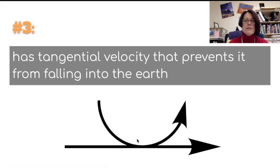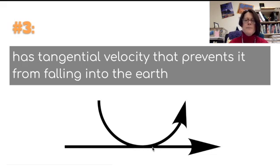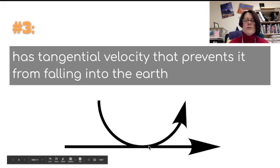this is a circle. This is the direction of the velocity. This velocity is tangent to the circle. This is a tangent line, if you remember that from math. So that is tangential velocity.